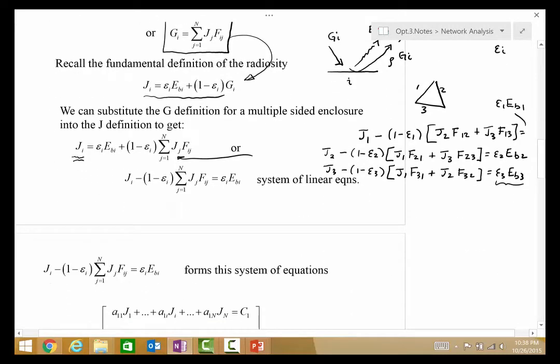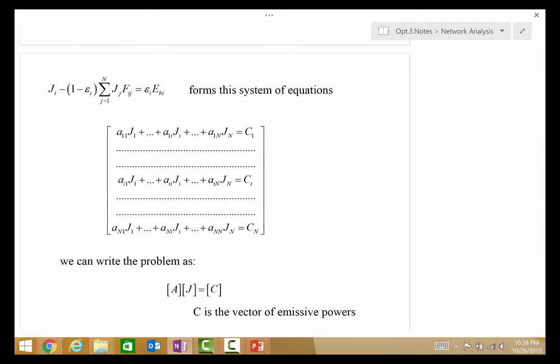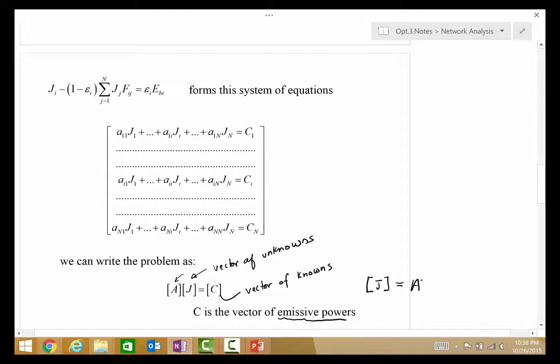So, we have a system of linear equations of this form, and what we typically do for problems of that type is we can write this in matrix notation as matrix A times a vector of unknowns, J, that's equal to some vector of knowns, and these vector of knowns are the vector of emissive powers. To solve this problem, notationally, we'd say that we want the inverse of this matrix times this vector.